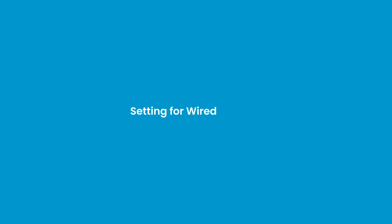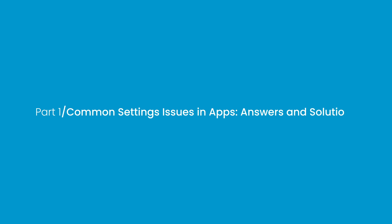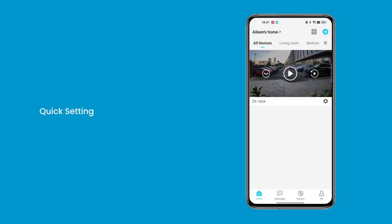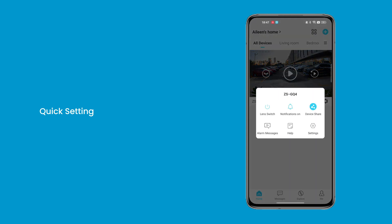Setting for Wired Camera — Part 1: Common Settings, Issues in Apps, Answers and Solutions. Question 1: How to set up quickly. When you need to set up quickly, you can click the Quick Navigation button here for expedited actions.